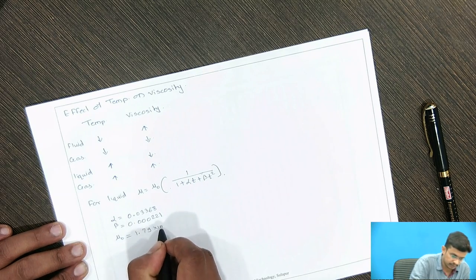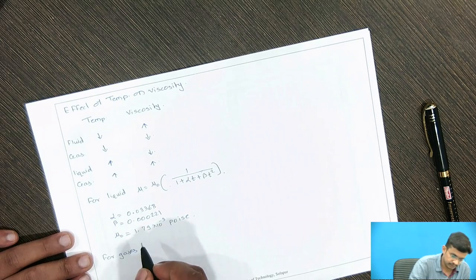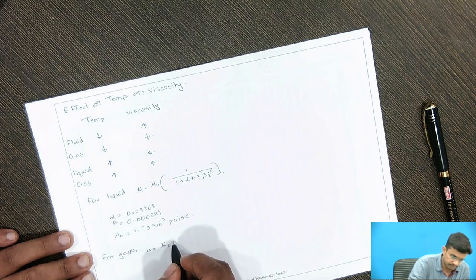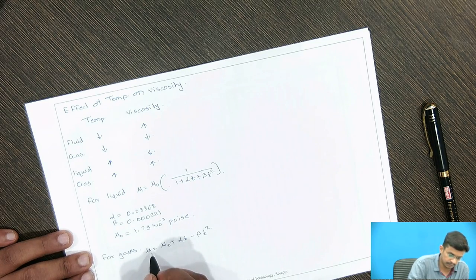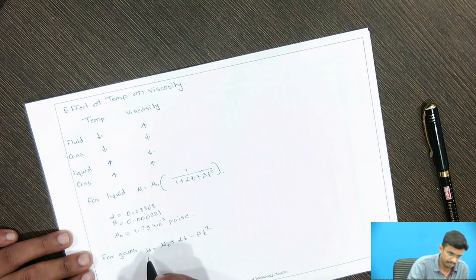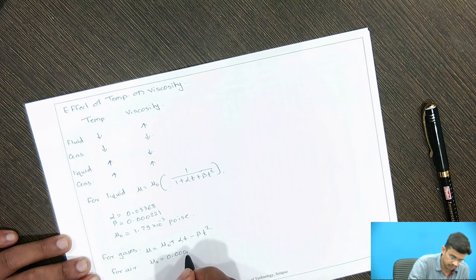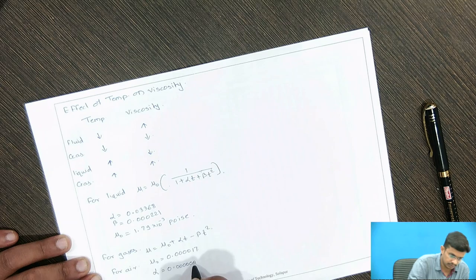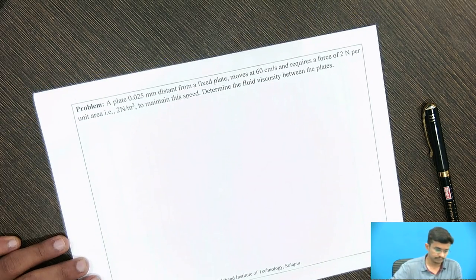For gases, the formula is: mu equals mu₀ plus αt minus βt², where mu is the viscosity of the gas at temperature t, mu₀ is the viscosity of the gas at temperature 0, and alpha and beta are constants and t is temperature. For air, mu₀ equals 0.0000017, alpha equals 0.000000056, and beta equals 0.1189 × 10⁻⁹.